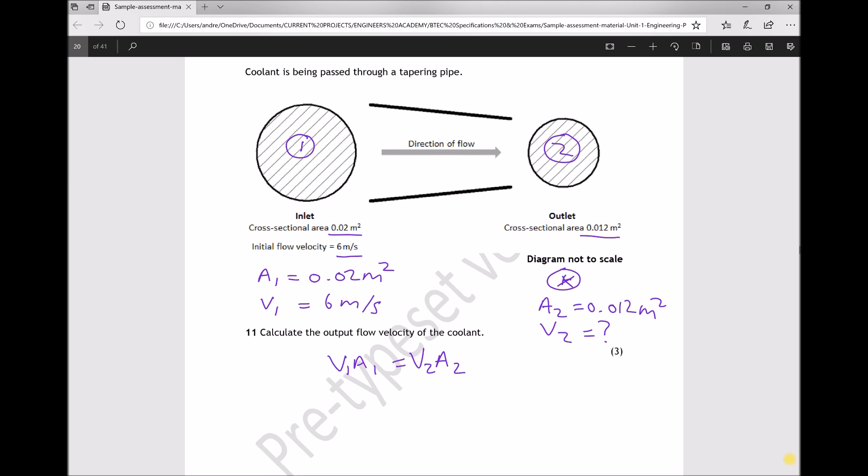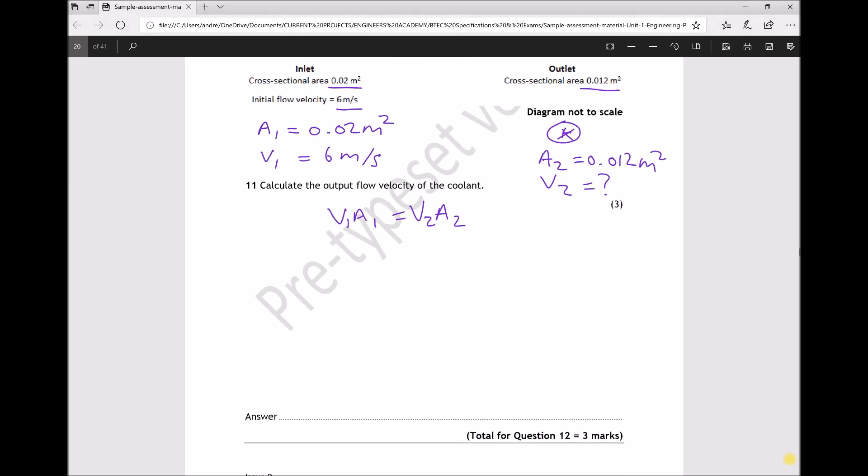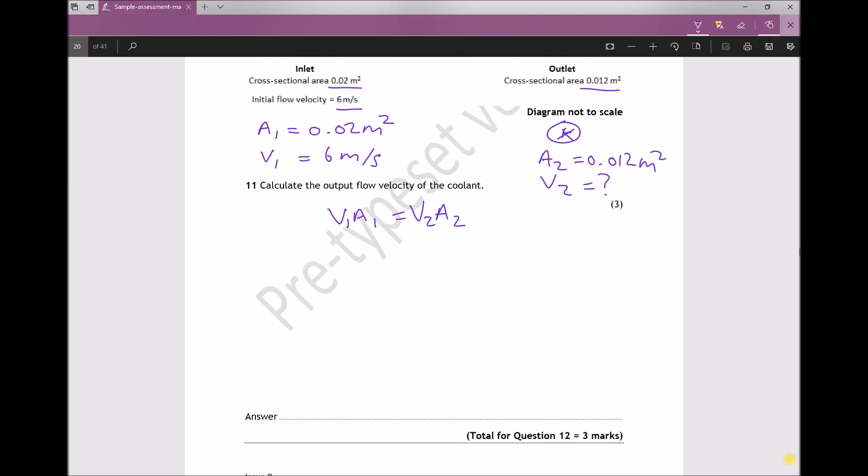So if we look at our equation there, what we need to do is rearrange that equation to make V2 the subject. So we want to get V2 on its own, and the way that we're going to do that is by dividing each side of the equation by A2. And what we'll be left with is V2 equals V1A1 over A2.